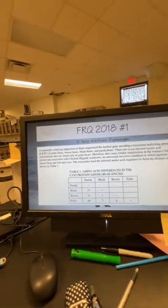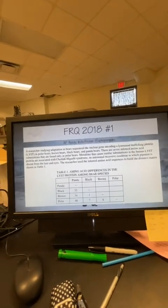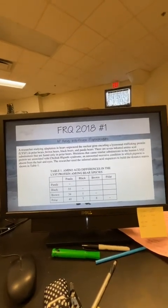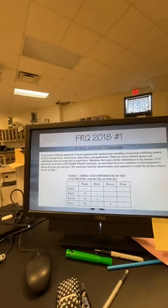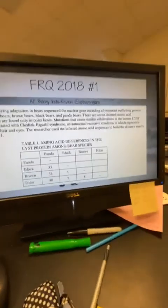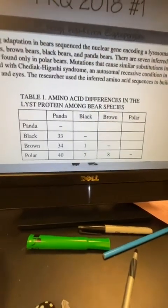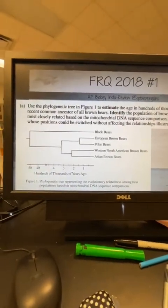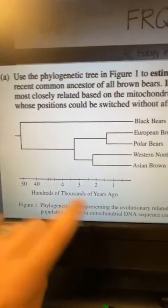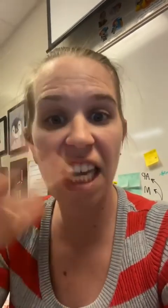They looked at a certain gene — the LYST gene. The LYST gene is a common gene in polar bears, brown bears, black bears, and panda bears. They looked at seven amino acid substitutions found only in polar bears; those same mutations cause whitening — an absence of pigmentation from hair and eyes — and of course polar bears are white. This now shows us the amino acid differences looking at that certain protein. First part: using that phylogenetic tree, estimate the age in hundreds of thousands of years. Notice the axis says hundreds of thousands of years. Do not try to get fancy — if they give it to you in hundreds of thousands of years, give it back to them in hundreds of thousands of years. Do not convert anything.